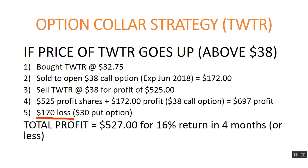That gives a total profit of about $527 — a 16% return in the next four months or less. We make $697 and subtract $170, giving us 16% if Twitter goes from $32.75 to $38 or higher. If Twitter went even higher, the put option would lose more value due to delta, so we might want to think about selling out or opening a new position. But a 16% return in four months is a 48% annualized return, and I think that's a wonderful return for a very low risk.